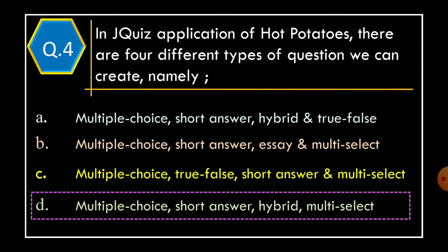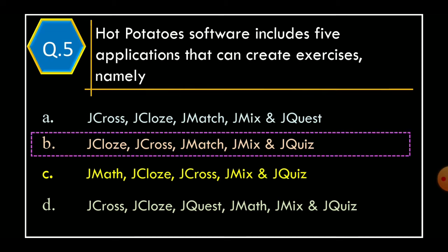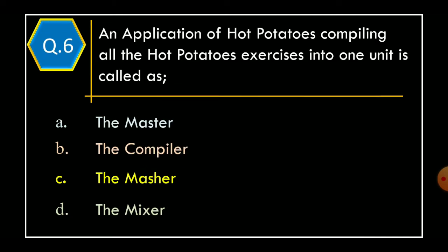Question 5. Hot Potatoes software includes five applications that can create exercises, namely: Option A, J-Cross, J-Close, J-Match, J-Mix and J-Quest; Option B, J-Close, J-Cross, J-Match, J-Mix and J-Quiz; Option C, J-Math, J-Close, J-Cross, J-Mix and J-Quiz; Option D, J-Cross, J-Close, J-Quest, J-Math, J-Mix and J-Quiz. And the correct option is Option B, J-Close, J-Cross, J-Match, J-Mix and J-Quiz.